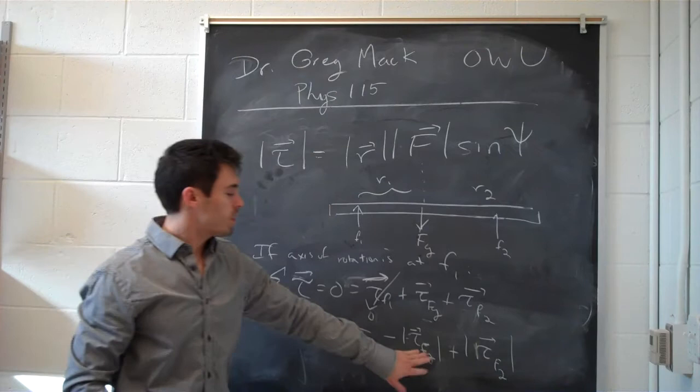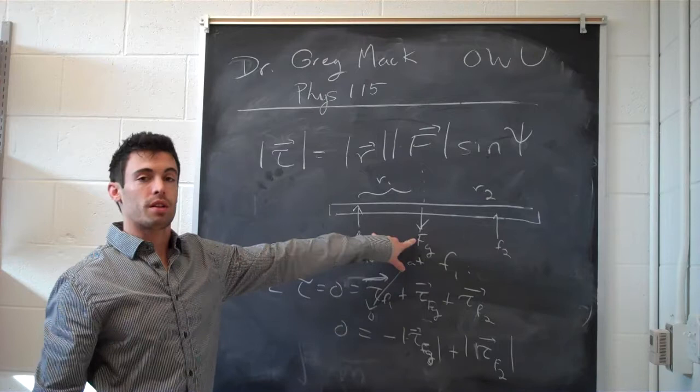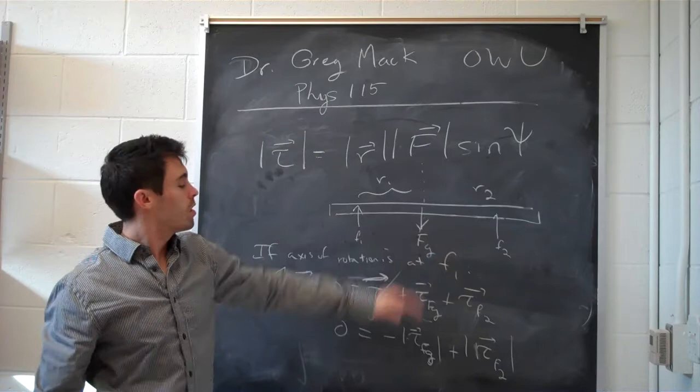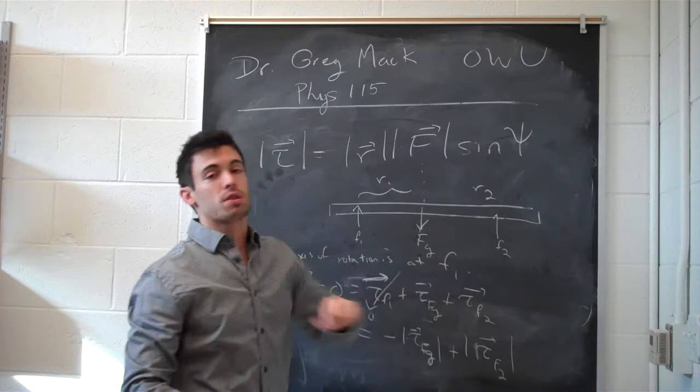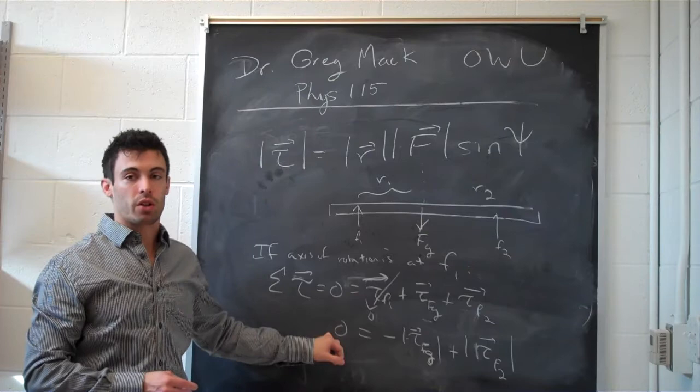So this fg here, the torque of that is going to be r1, because that's the distance from this axis of rotation to there, times mg. And this one is going to be r1 plus r2 times the magnitude of this force up. And these have to be equal if the system is in mechanical equilibrium.